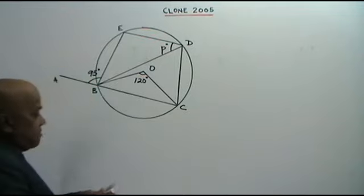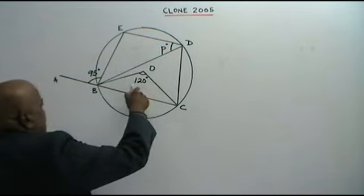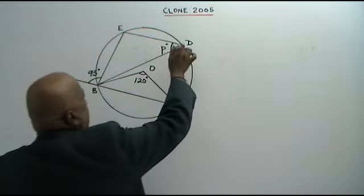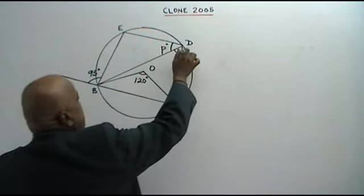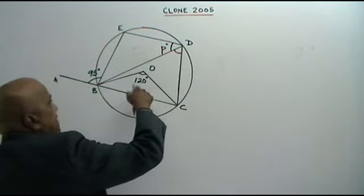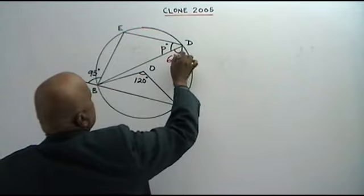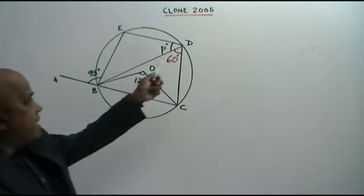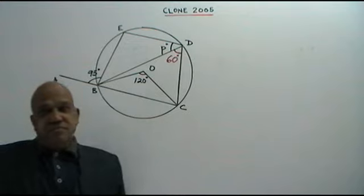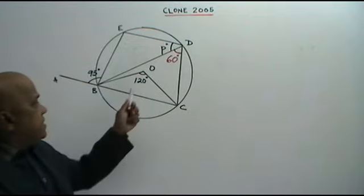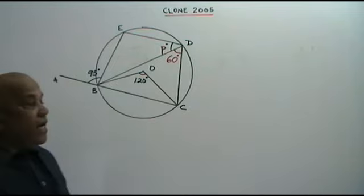The first circle theorem: the angle at the center is twice the angle at the circumference. So if this angle at the center is 120 degrees, the angle at the circumference is 60 degrees — half of 120.